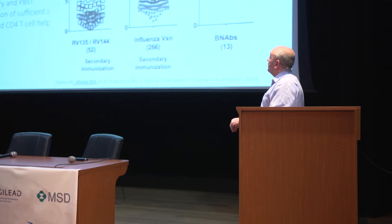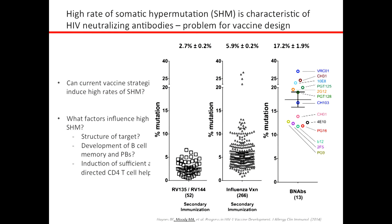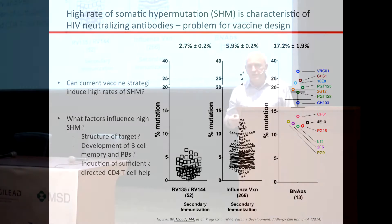One of the problems with HIV vaccine development is the tremendous level of somatic hypermutation required. VRC01 is upwards of 30% away from germline, whereas something like RV144 is maybe 5%, and some flu antibodies we've studied are around 15%, with rare ones up at 20%. So how can current vaccine strategies induce high rates of somatic hypermutation? What factors influence it — the structure of the target, development of memory B cells versus short-lived plasma cells, or induction of directed CD4 T helper cell responses?